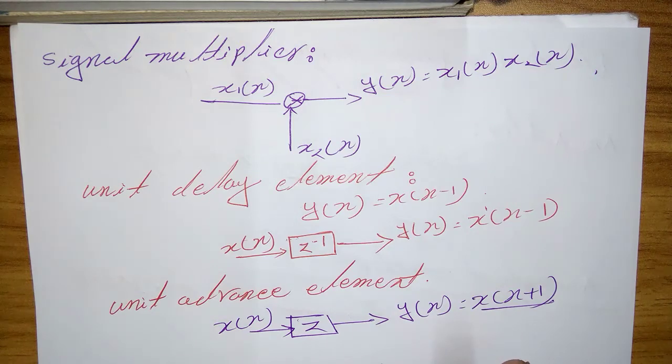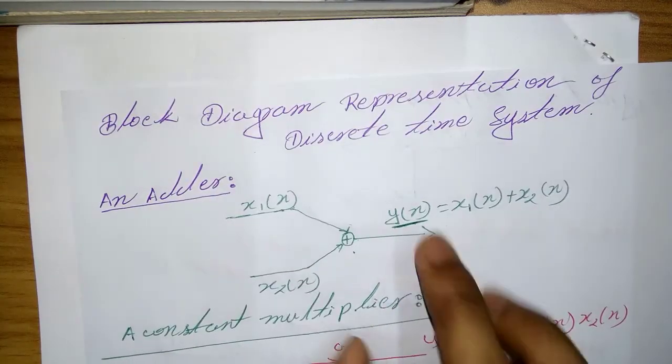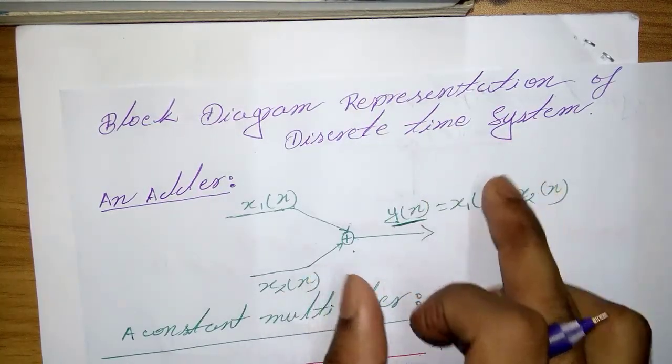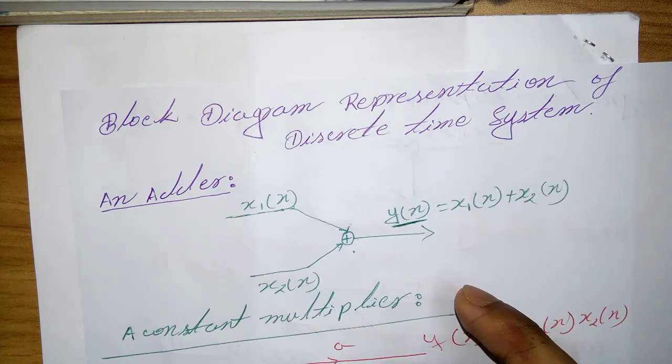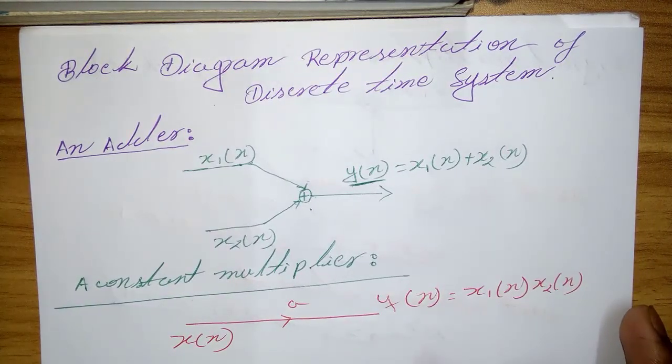That's the block diagram representation of discrete time signals or discrete time systems. Thank you everyone, and subscribe to my channel. See you in the next tutorial.